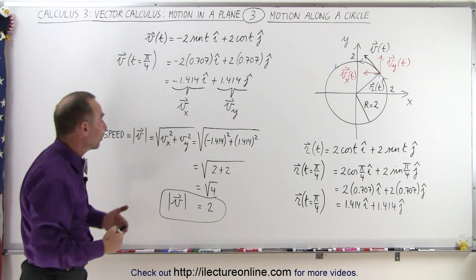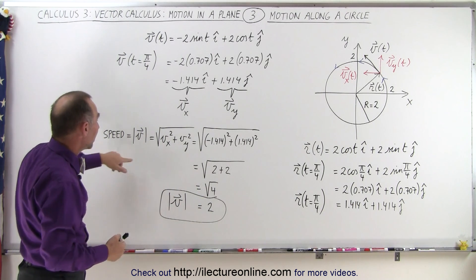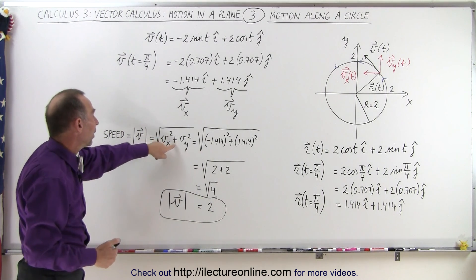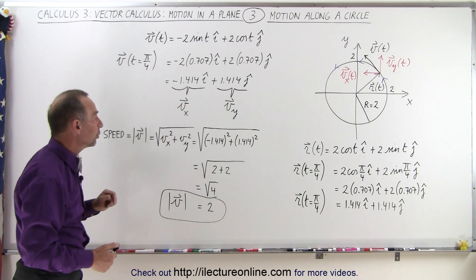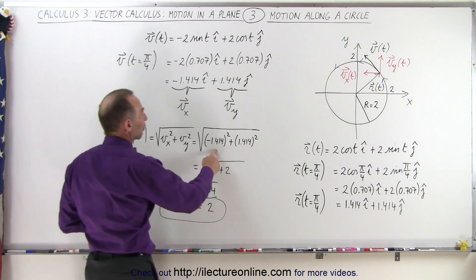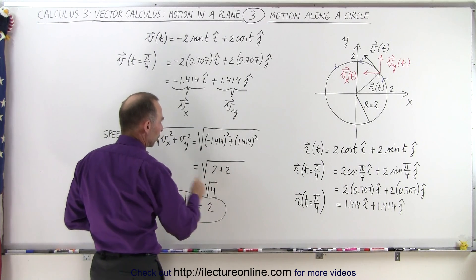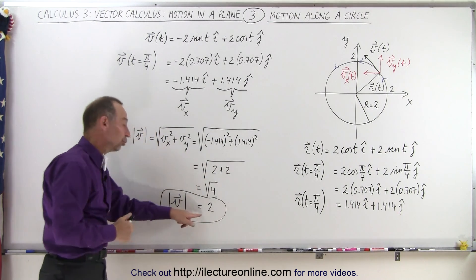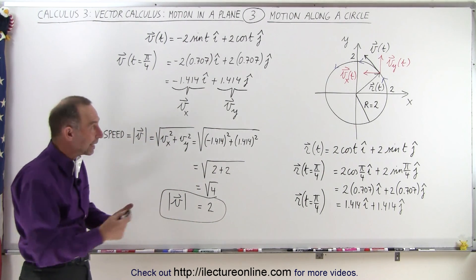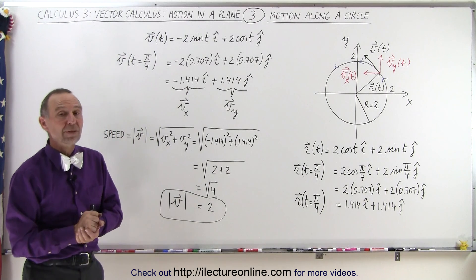If we want to find the magnitude of the velocity, the speed, we take the square root of the sum of the squares of the two components. So minus 1.4 squared plus 1.4 squared, that would be 2 plus 2 or 4. The square root of 4 is 2. So that means our velocity at that moment in time is equal to 2.